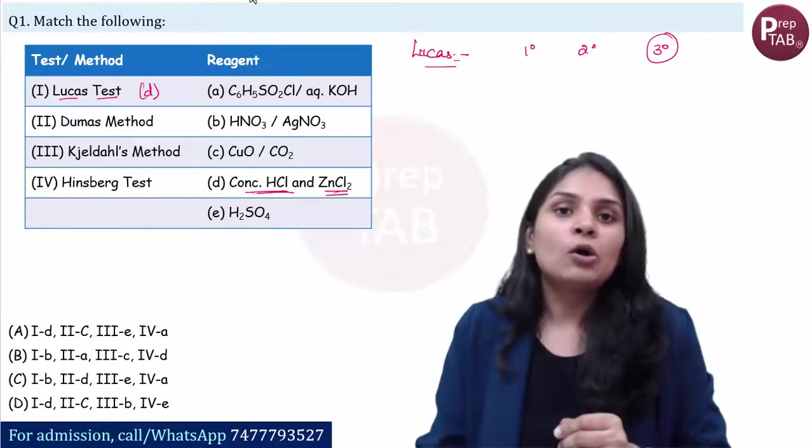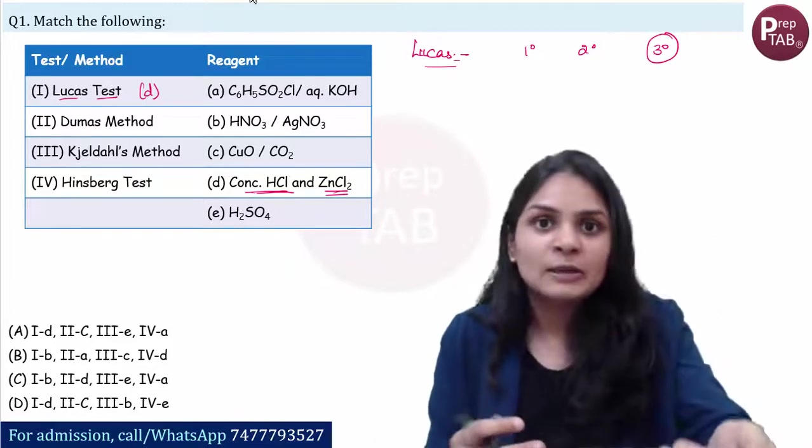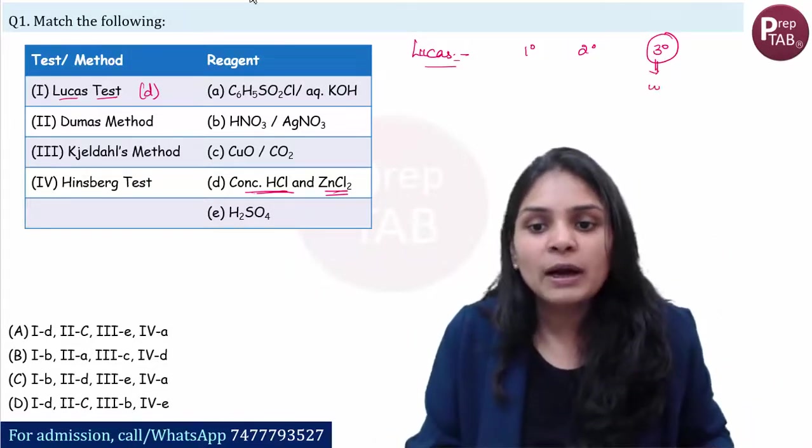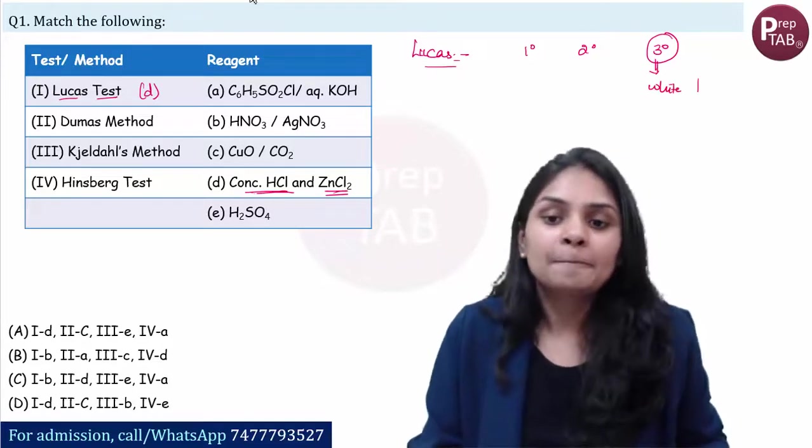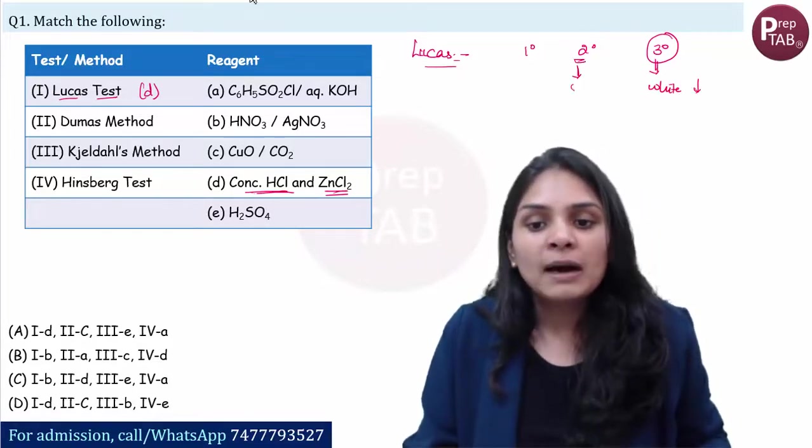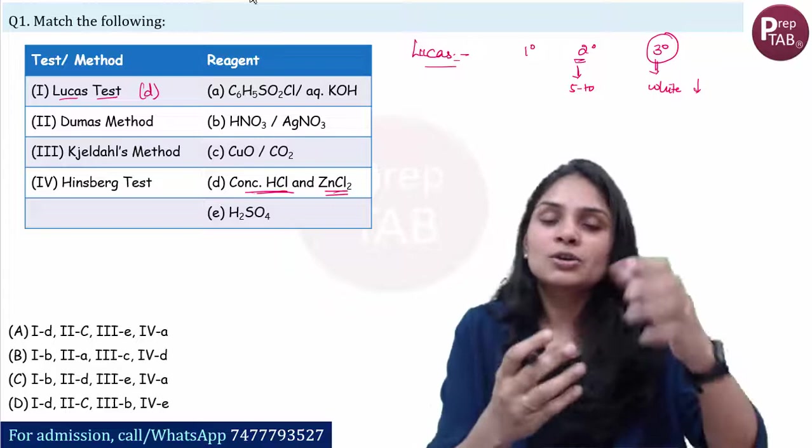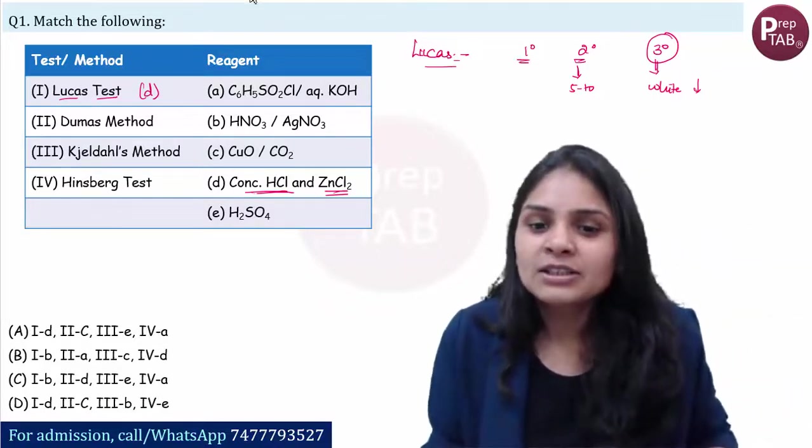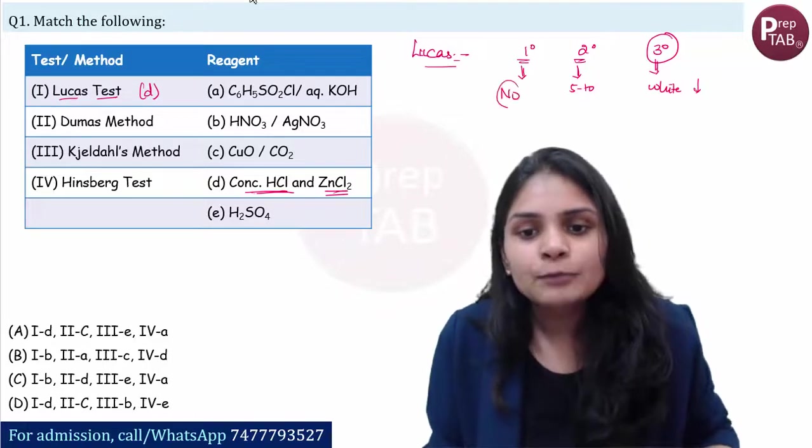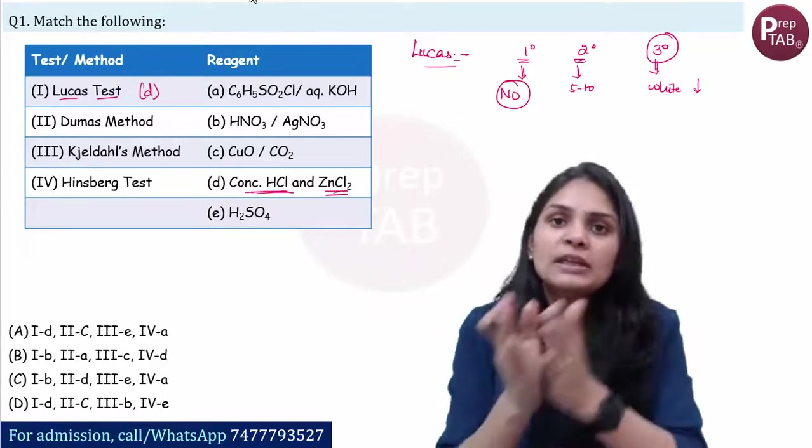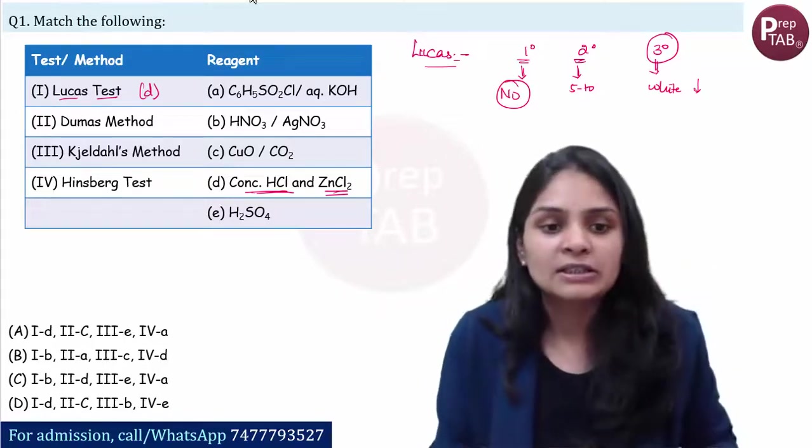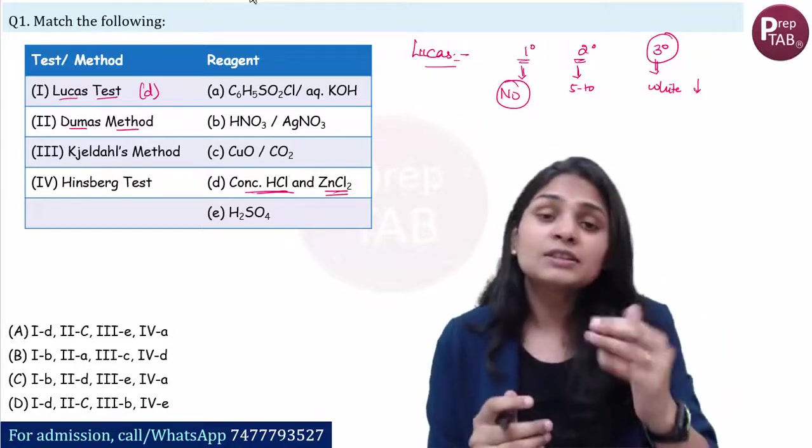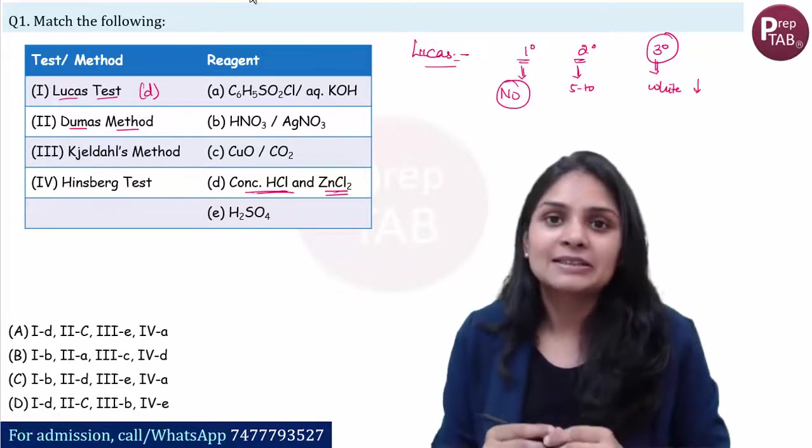Which we use, that is concentrated HCL and ZnCl2, this is the answer B. 3 degree alcohol alkyl halides show immediately white turbidity, 2 degree alcohol shows 5-10 minute reaction then white turbidity, and 1 degree shows no turbidity. So this is Lucas test.